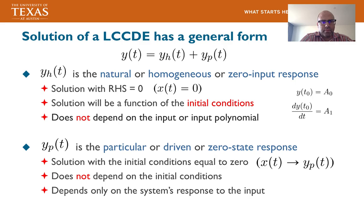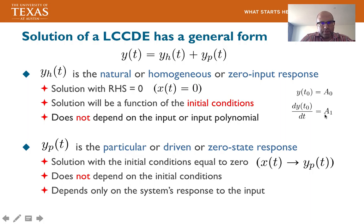For the general solution of a linear constant coefficient differential equation, we break the solution y(t) into two pieces. The first, yh(t), is the natural or homogeneous or zero-input response — the solution where there's no input, only a function of initial conditions. Initial conditions are values of the output at certain times, for example y(t₀) equals a0 and dy/dt at t₀ equals a1. The particular or driven or zero-state response is the solution when initial conditions are set to zero and depends only on the system's response to the input. The total solution is the sum of these two responses.